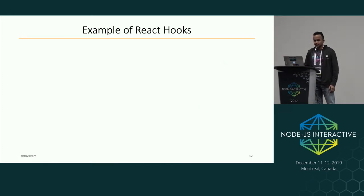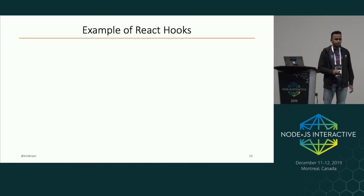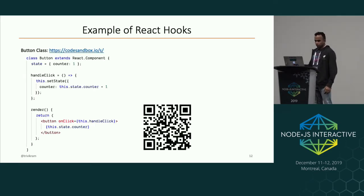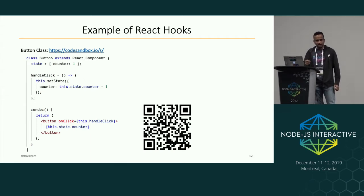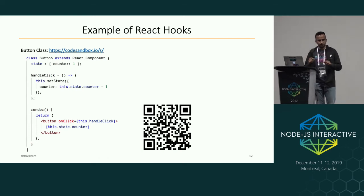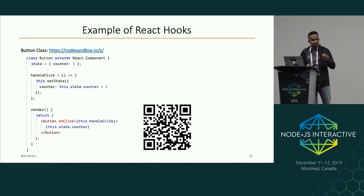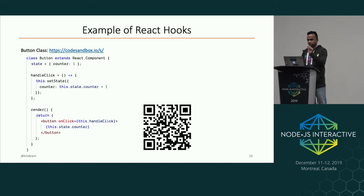Let's see an example of React Hooks. Here we have a class Button which has a render function that shows a button. On click, it calls handleClick, and handleClick updates the state. The initial state has a value 'counter' initialized to one, and when clicked it updates.